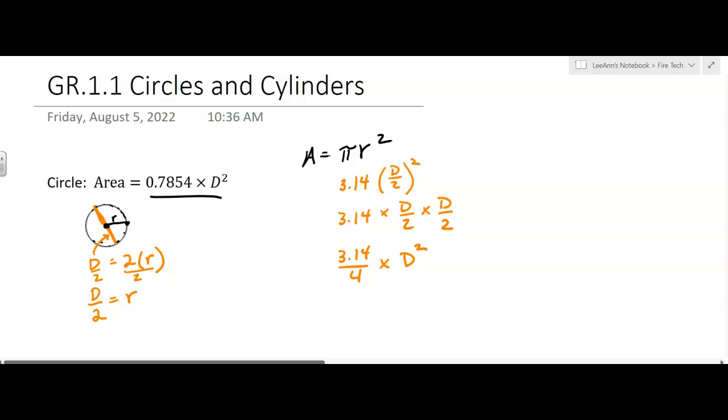So, what's 3.14 divided by 4? Oh, it's 7.85. Well, they went more decimal places. So, that's where that's coming from. It's about 0.785 times D squared. I just wanted you to know where the formula came from, and that your math teachers didn't lie to you. This is just an alternative formula that we're going to use in hydraulics. So, that's where it comes from.